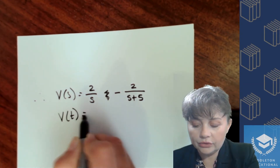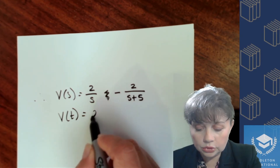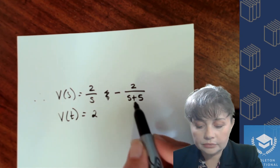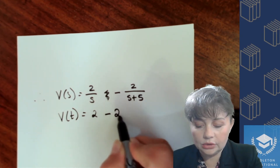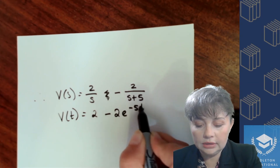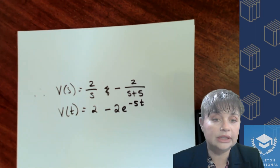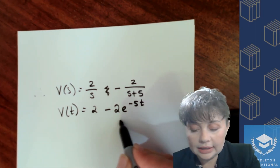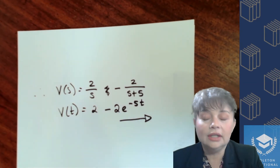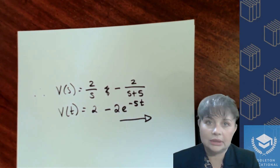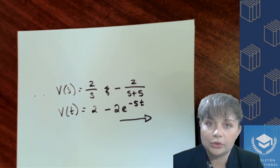So then I can say that therefore v(t) is going to be 2 minus 2e to the minus 5t. And that's our answer — a very neat, nice answer.